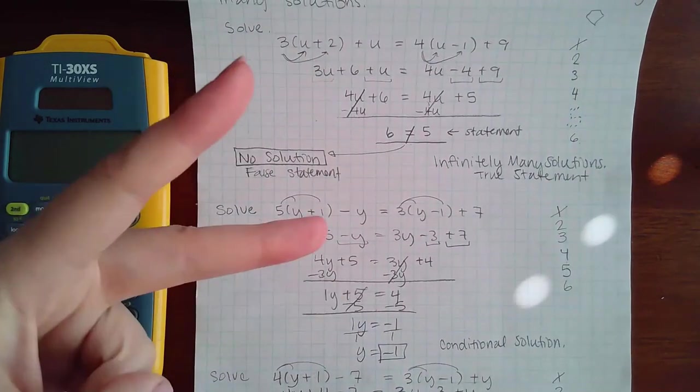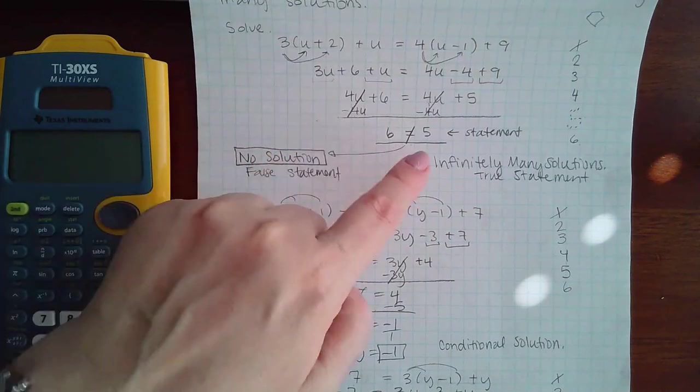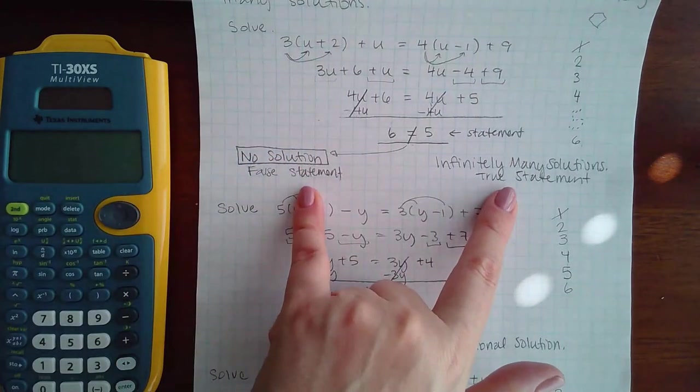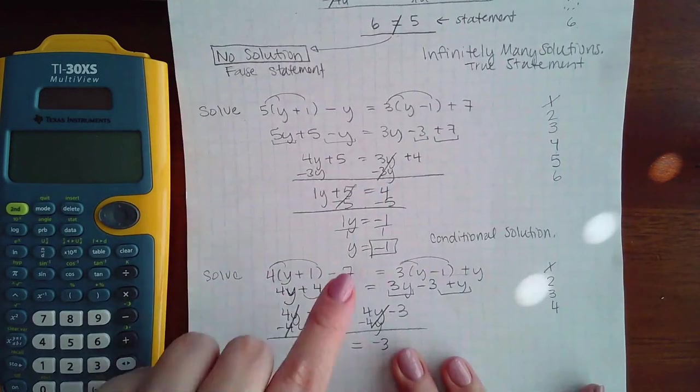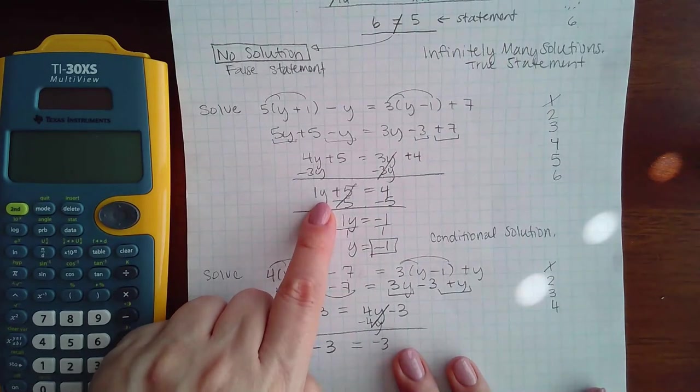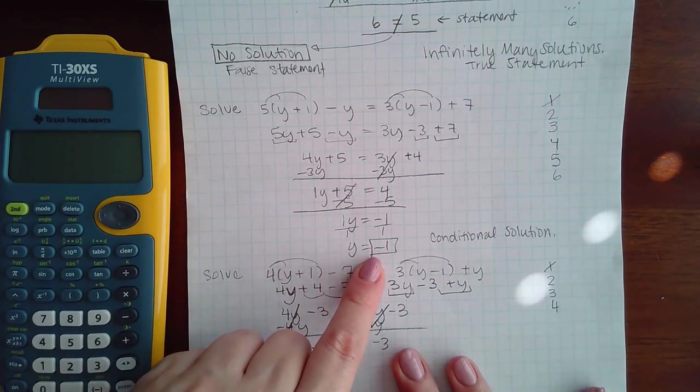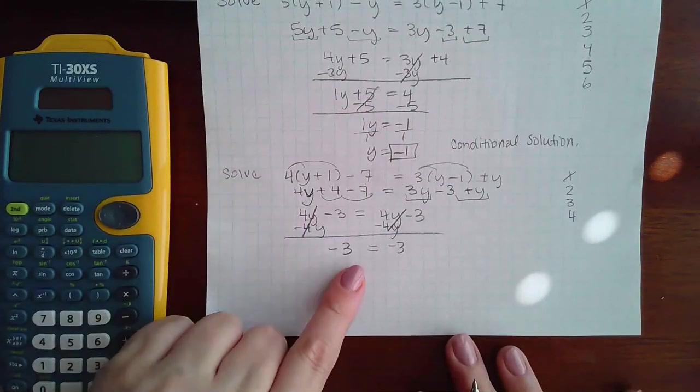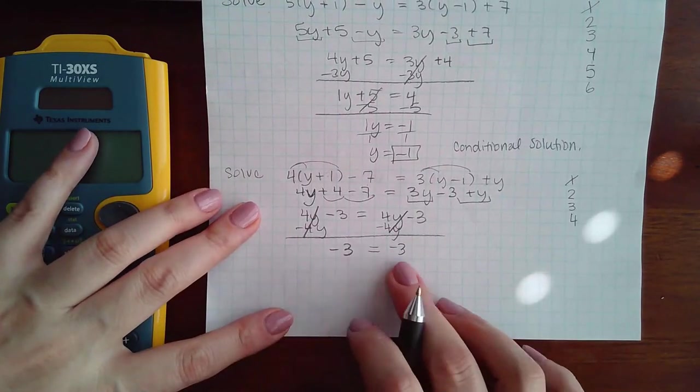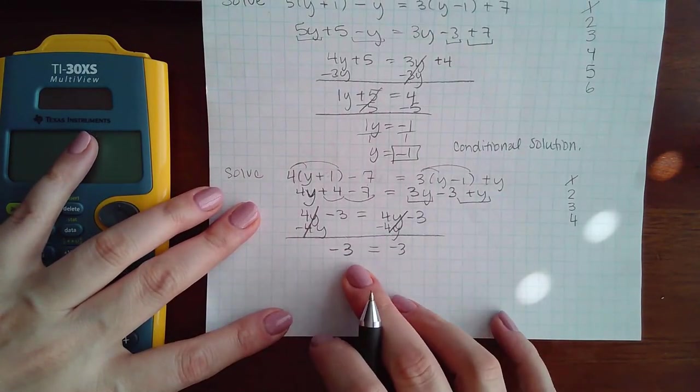Once you move the variables to one side, you have one of two things that are going to happen. Either the variables are going to completely wipe out and then you have to decide which of these two answers, or there's going to be variables left and you have to continue through step five and six. Here my variables cancelled out, but I do have a true statement because negative 3 does in fact equal negative 3.